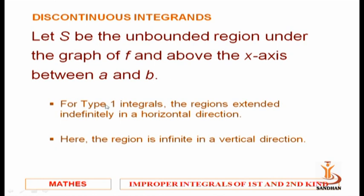For Type 1 integrals, the region extended infinitely in the horizontal direction — either to positive infinity or negative infinity along the x-axis. But here we are considering vertical directions: at x equals a or x equals b, the function is not defined, which corresponds to vertical asymptotes.